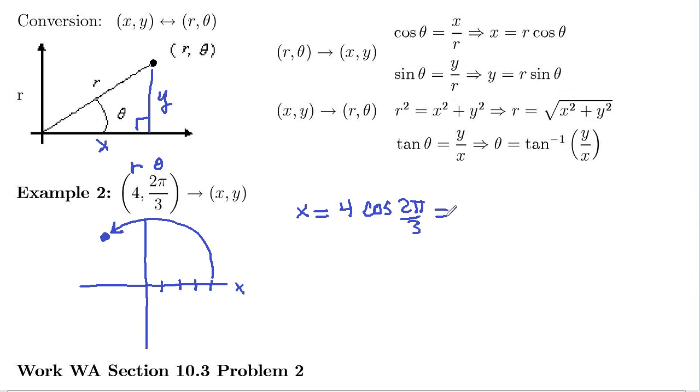And if you check your unit circle, cosine of 2π over 3 is negative 1 half. So this is 4 times negative 1 half, which is negative 2.